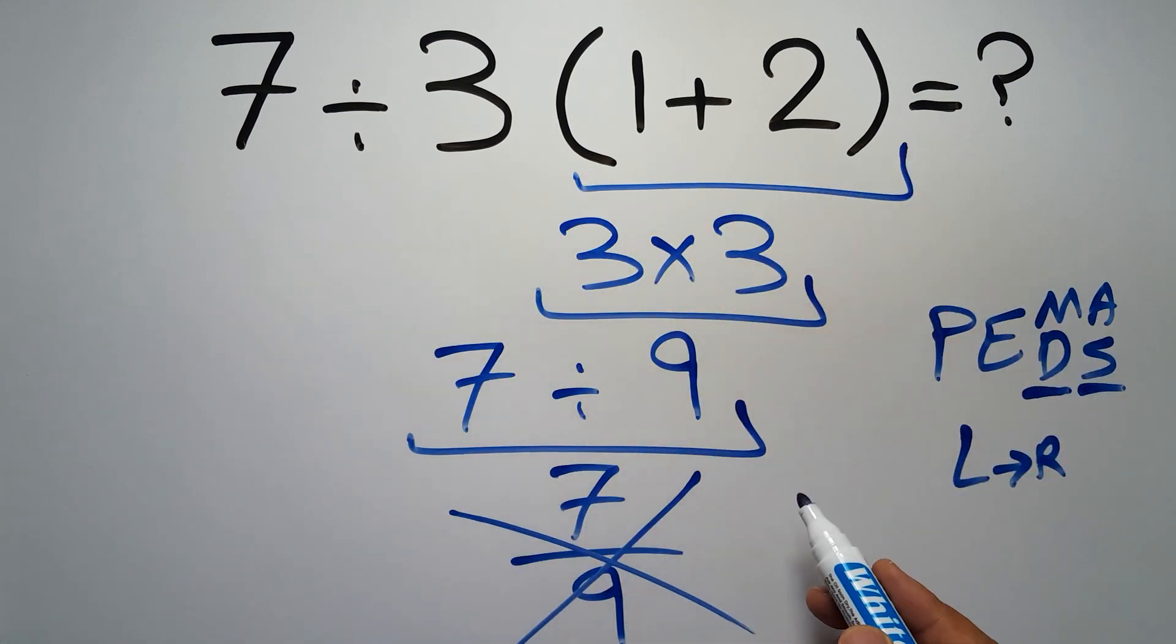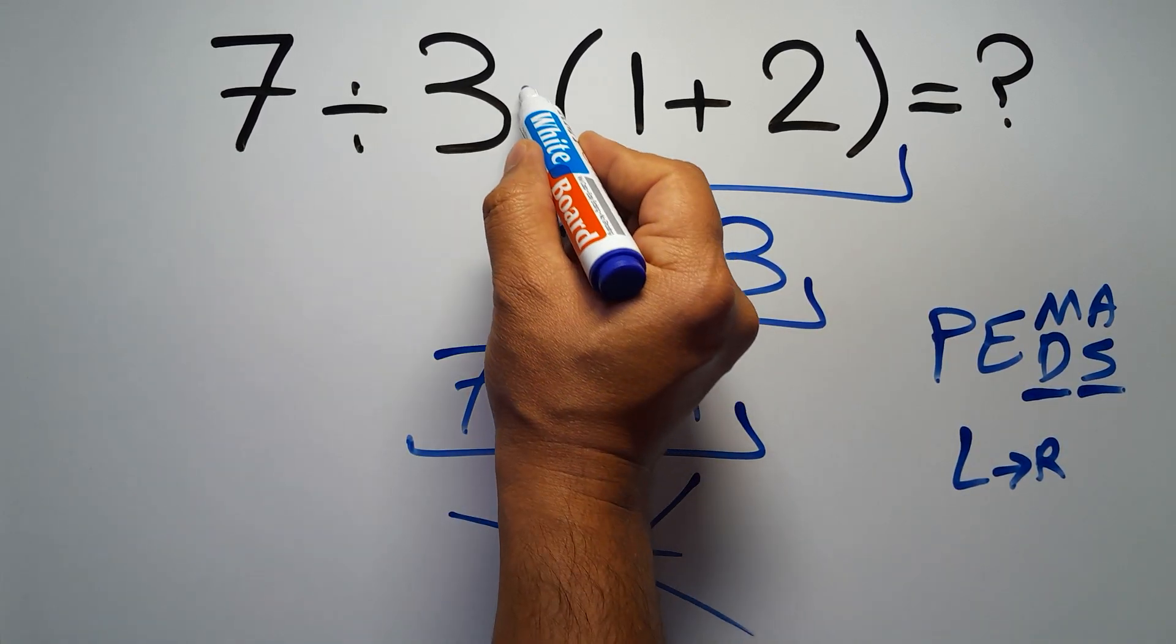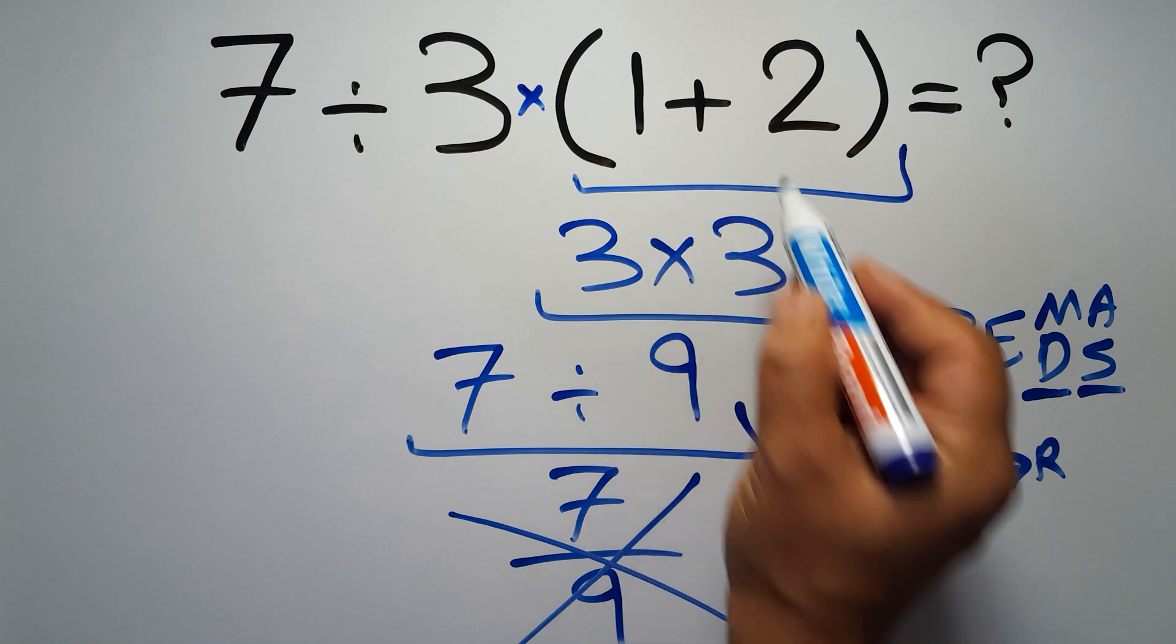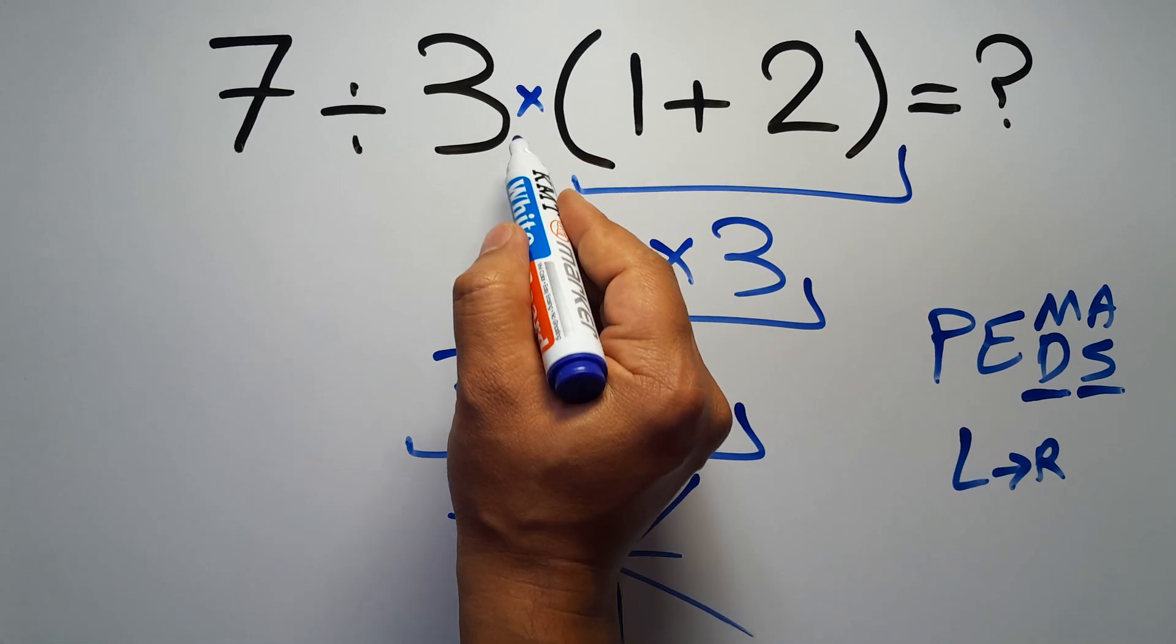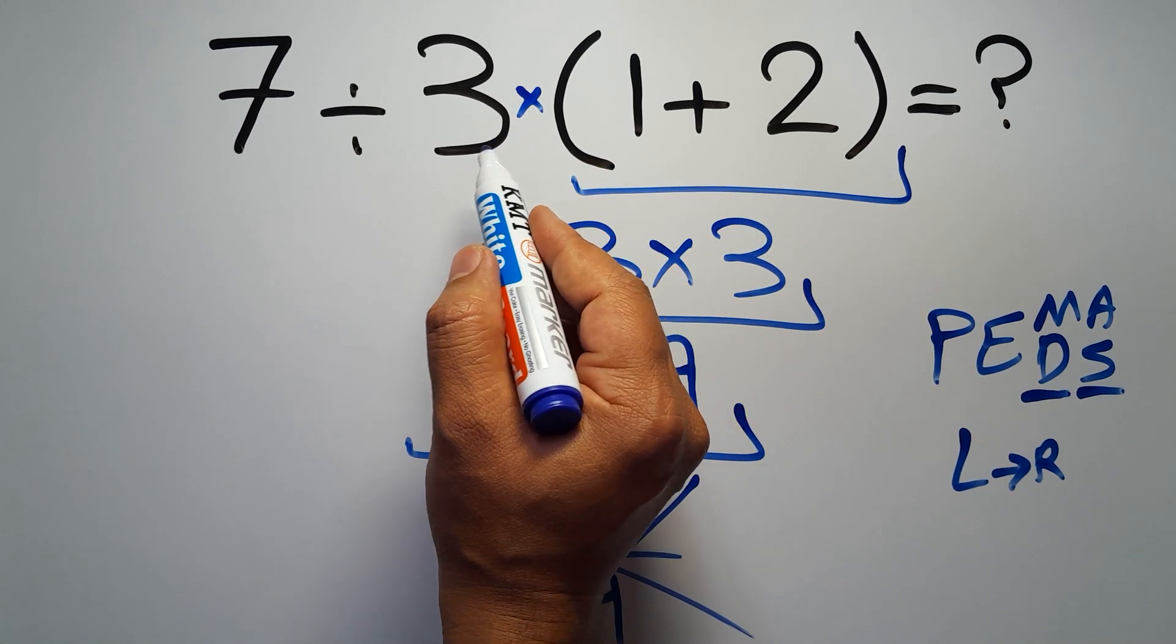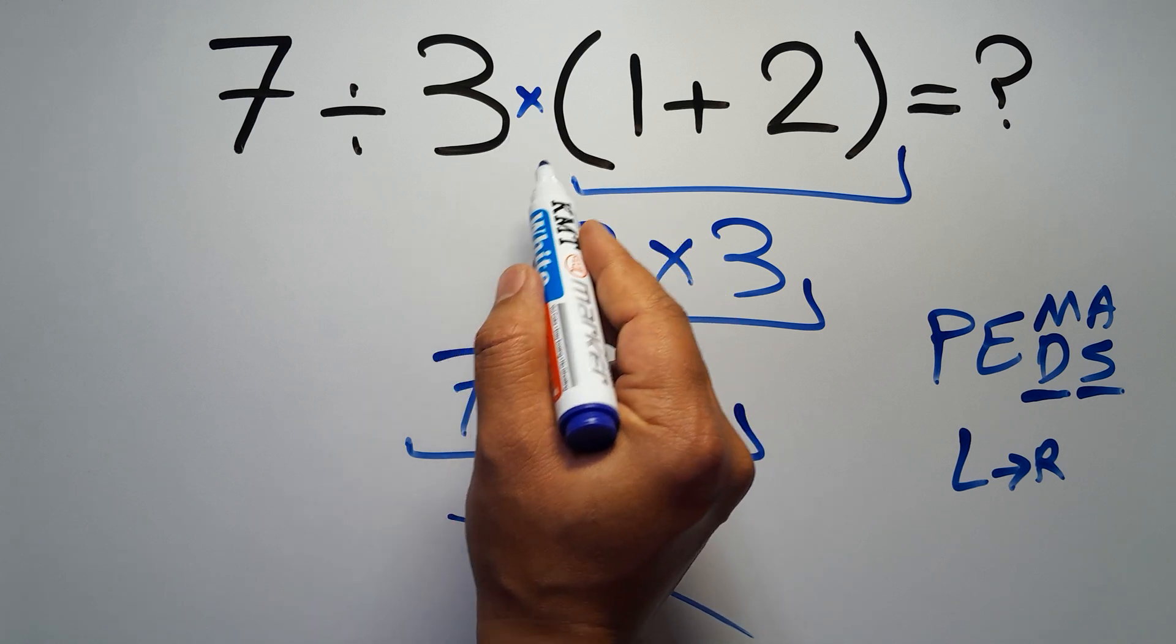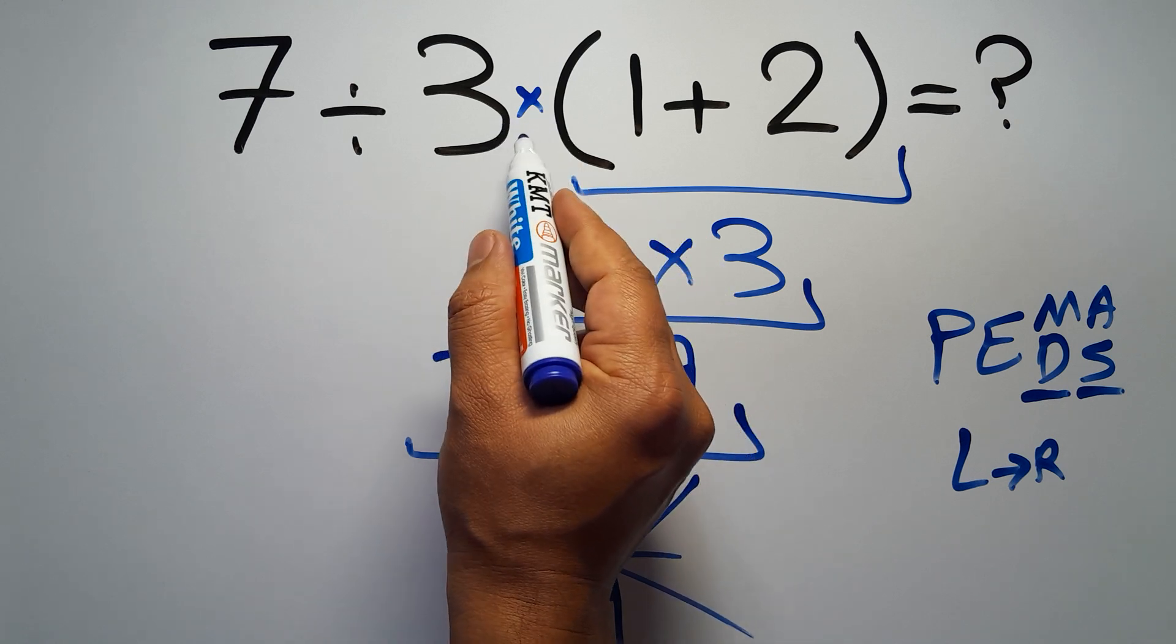In this expression we have one division, one multiplication, and one parentheses. Inside this parentheses we have one addition. Here we have a multiplication, because in mathematics when a number is placed next to parentheses, it means multiplication, and we usually don't write the multiplication sign for brevity.